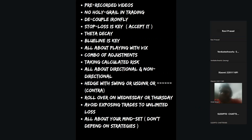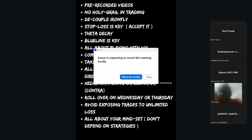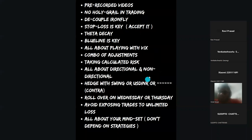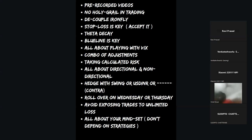You need to know straddle management. Iron Fly is a combination of two credit spreads. When the market goes one-sided, identify which credit spread is giving profit — exit that one, and manage the losing one. What many people do wrong is they retain the winning spread hoping for a U-turn, and end up losing the profit from the winning side.